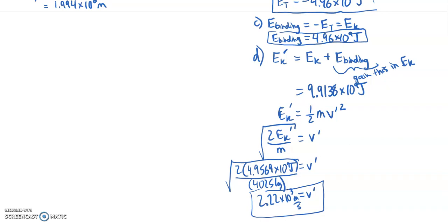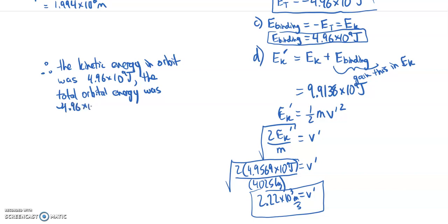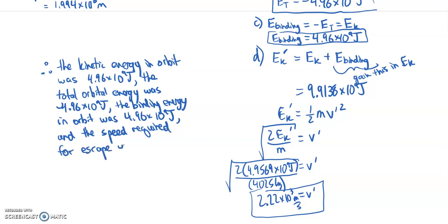I can conclude, therefore, the kinetic energy in orbit was 4.96 times 10 to the 9 joules, and the speed required for escape was what we just found, 2.22 times 10 to the 3 meters per second.